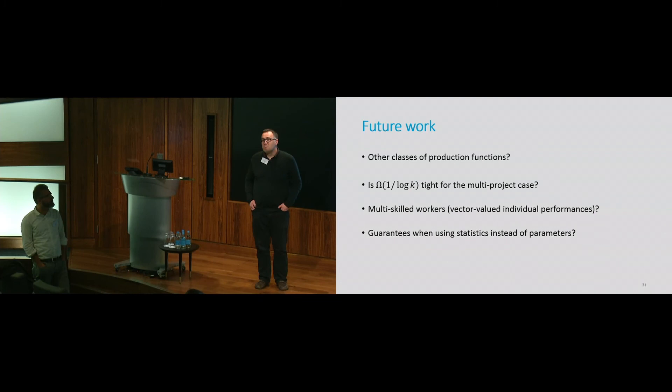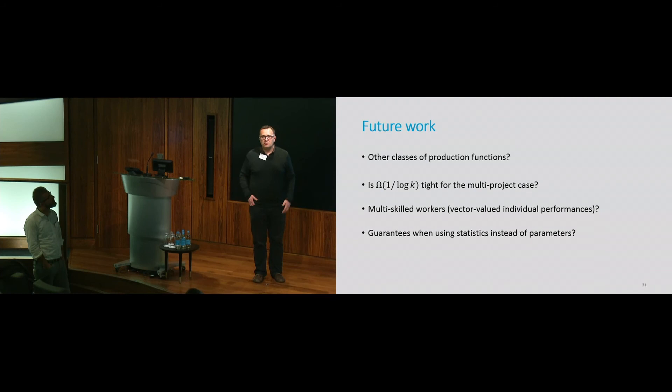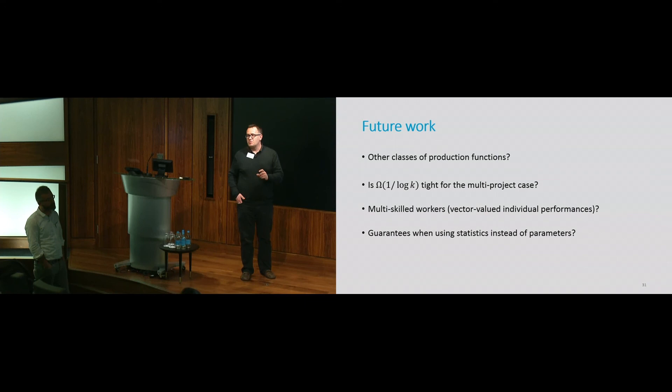On computational complexity: computing test scores is really about evaluating an expected value of a function of independent, not necessarily identically distributed random variables — not too computationally complex. For mean test scores it's just the expected value; for replication test scores it's something slightly different. The key question is less about computational complexity and more about what you can say about team performance based on individual performance.